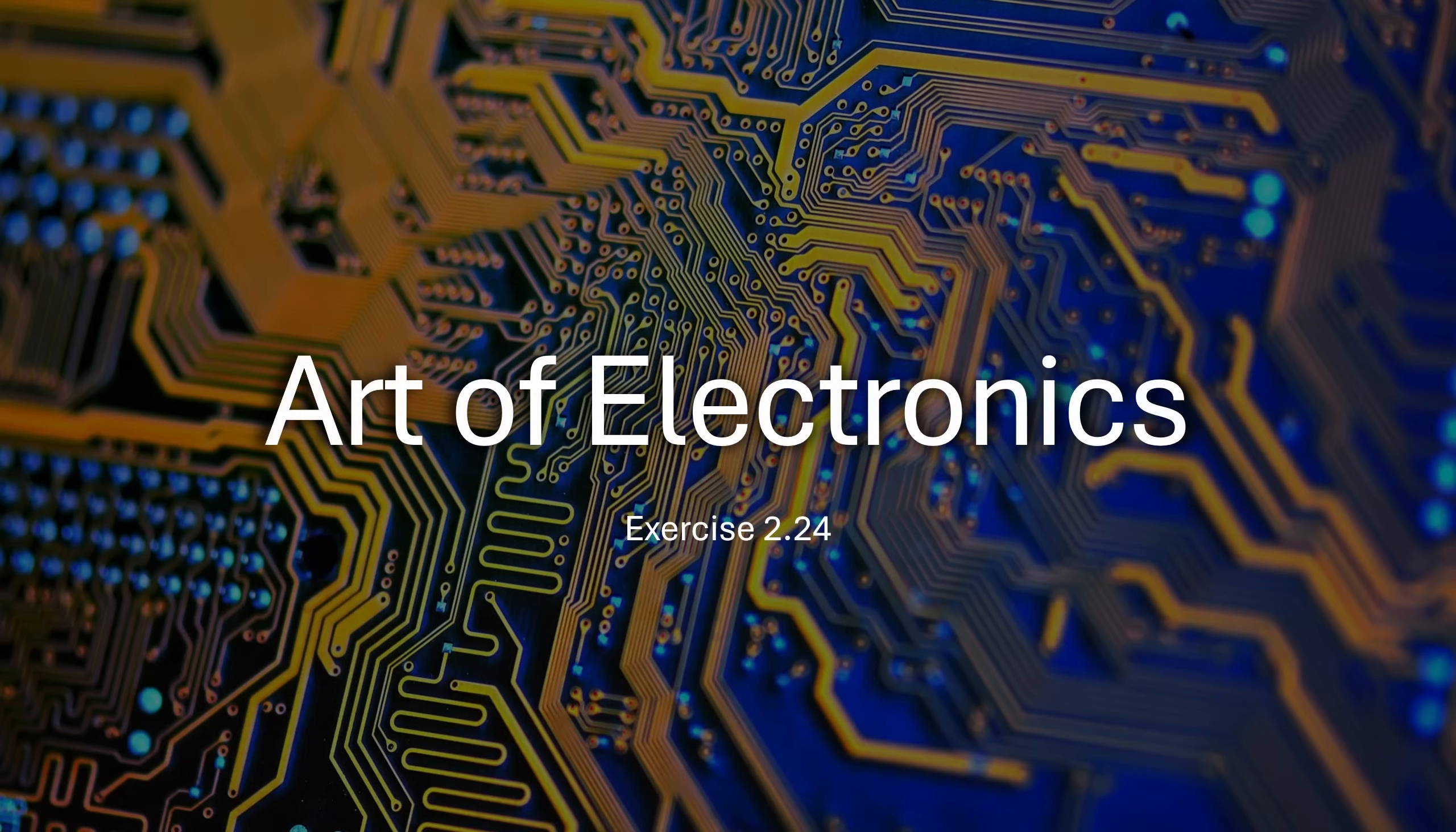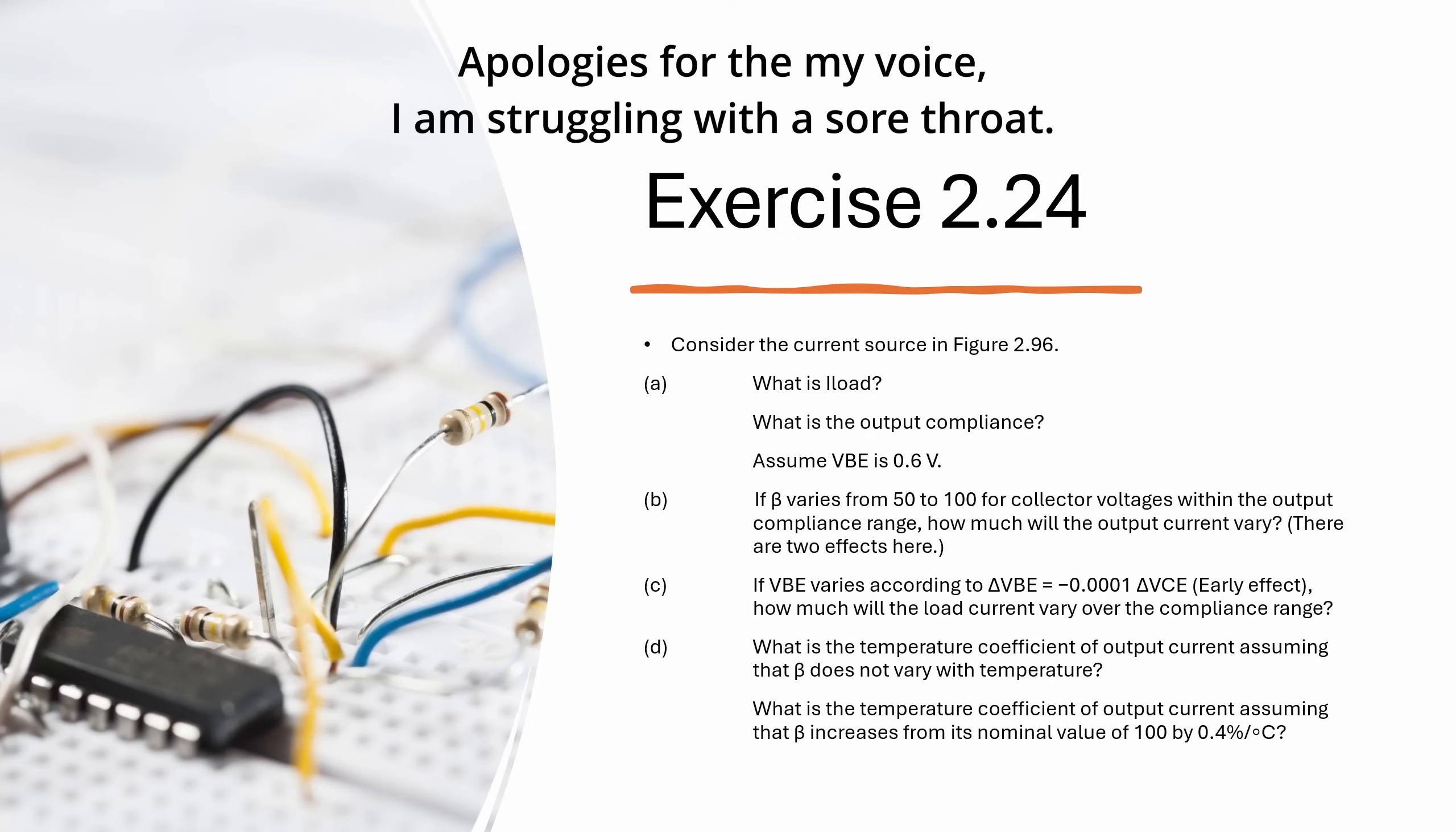Hello and welcome back. In today's video we are going through Art of Electronics exercise 2.24. Now this question is a little bit long. For this question we are looking at a current source with an NPN transistor and the circuit for this question is given in figure 2.96. The question is divided into four parts with a number of different questions included within them.